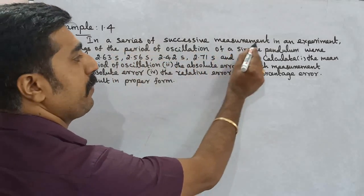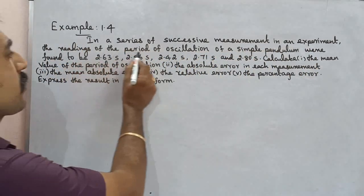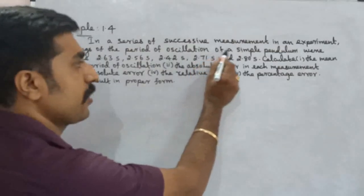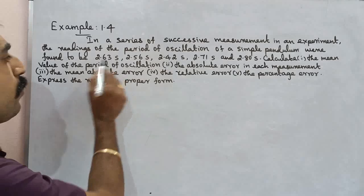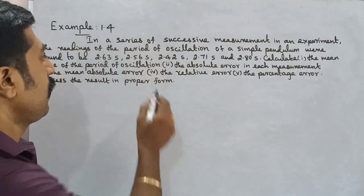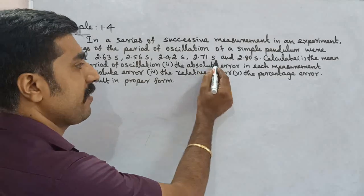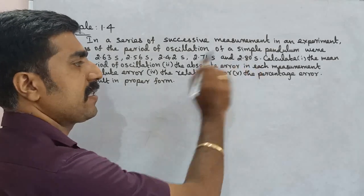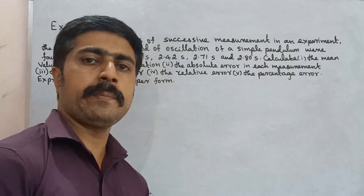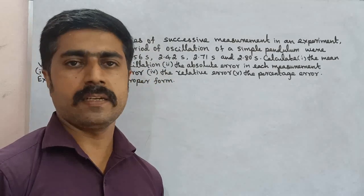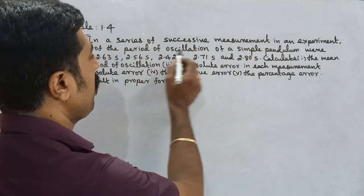In a series of successive measurements in an experiment, the readings of the period of oscillation of a simple pendulum were found to be 2.63 seconds, 2.56 seconds, 2.42 seconds, 2.71 seconds, and 2.80 seconds. So we will do the readings — that is measurement, and it has more of the measured values.